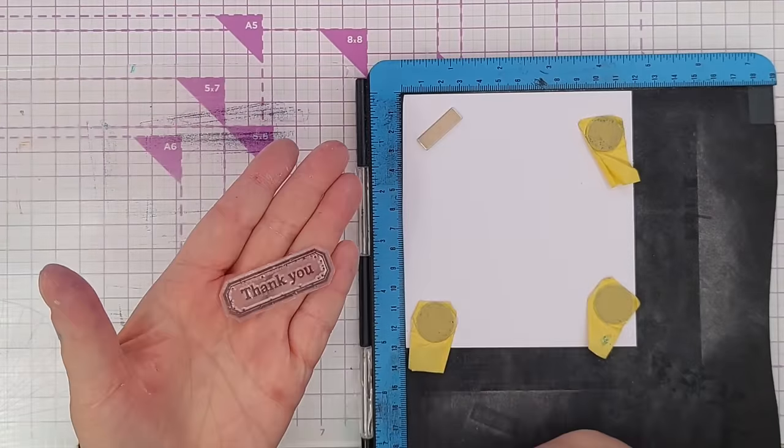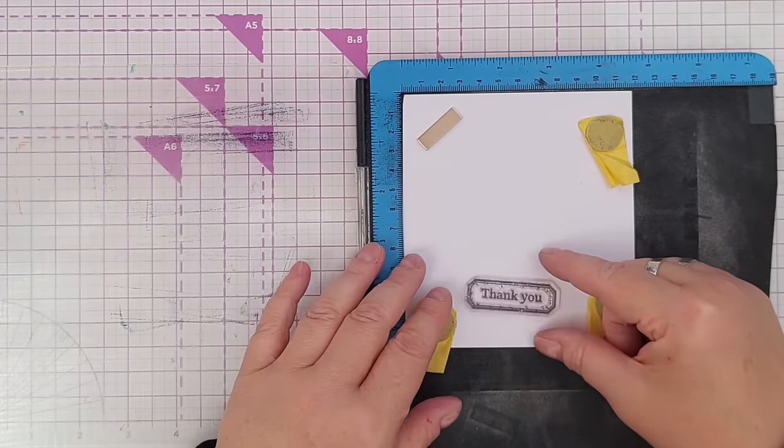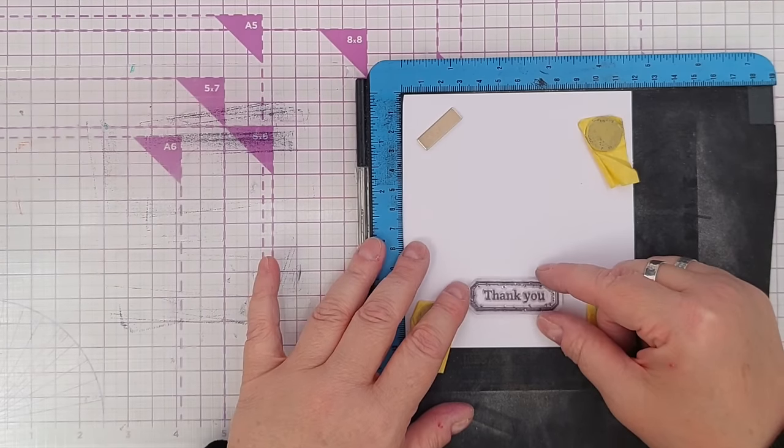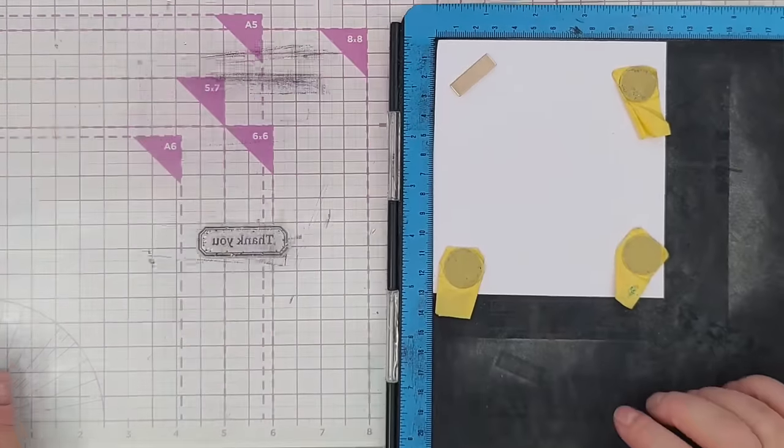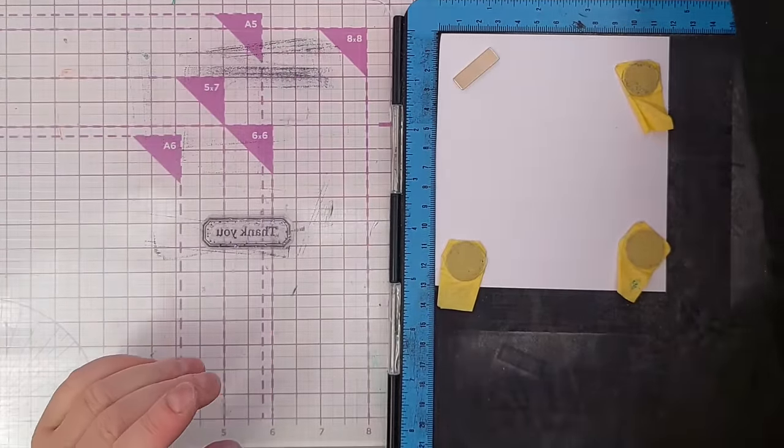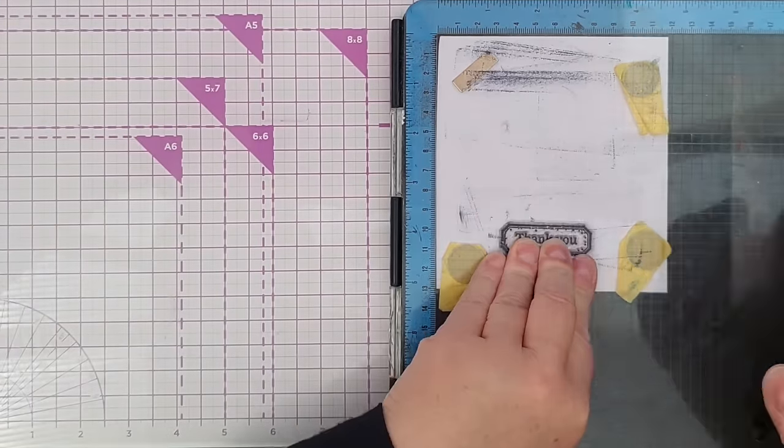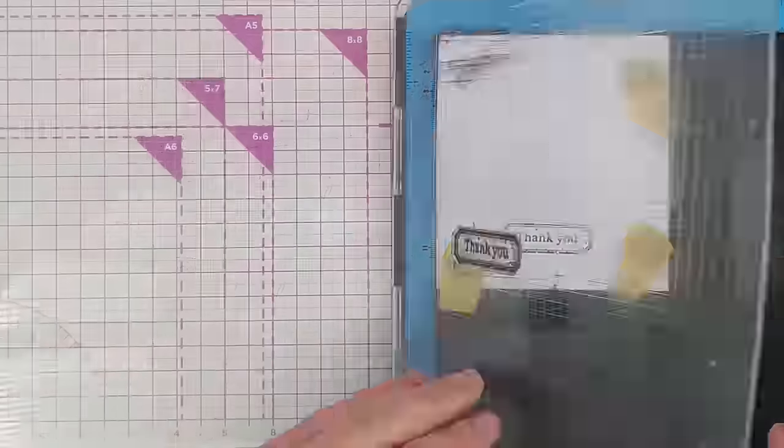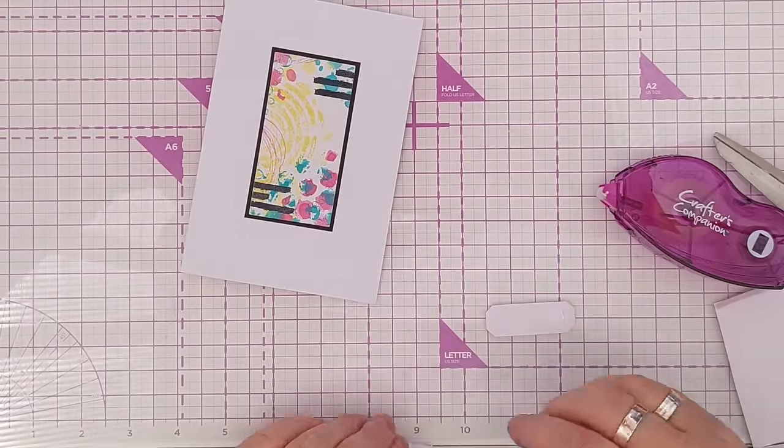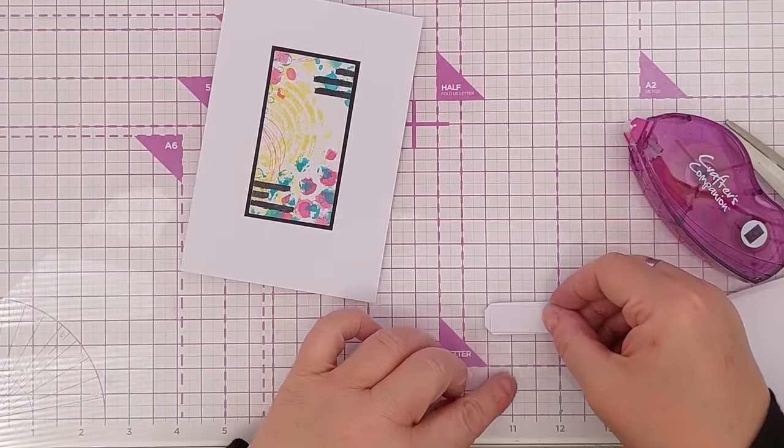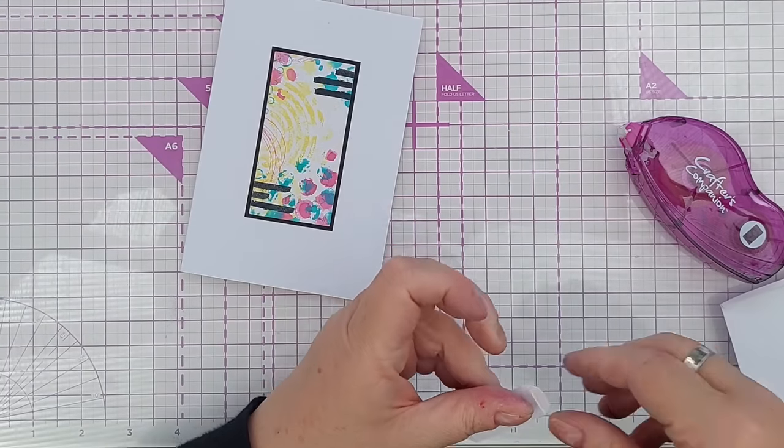For my sentiment I've chosen a thank you stamp, it's a grungy label with thank you already in it which I think will work well. And I'm using another paper scrap to stamp it on. So I've trimmed that out and I'm going to stick it on but I want to give it a layer of card behind it just to give it a bit of lift but not as much as if I were to use foam tape.